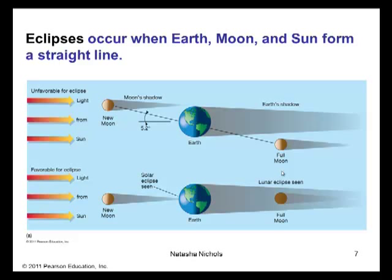Eclipses occur when Earth, Moon, and Sun form a straight line. If you take a look at the bottom half, we have the unfavorable scenario for eclipses. And on the top half of this picture, we have the favorable scenario for an eclipse. So an eclipse occurs when Earth, Moon, and Sun are precisely aligned. If the Moon's orbital plane lay in exactly the plane of the ecliptic, this alignment would occur once a month. However, because the Moon's orbit is inclined at about 5 degrees to the ecliptic, not all the configurations are favorable for producing an eclipse. But again, an eclipse will take place during the favorable scenario.